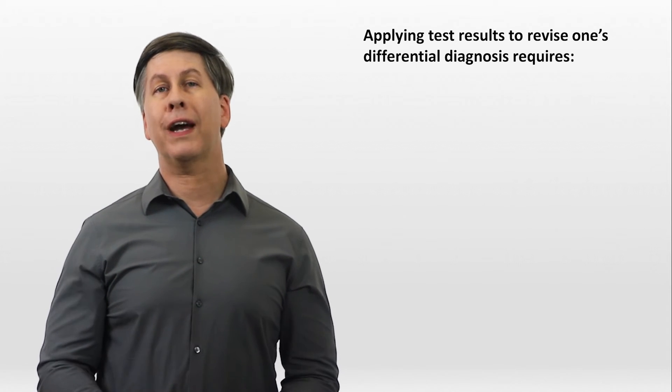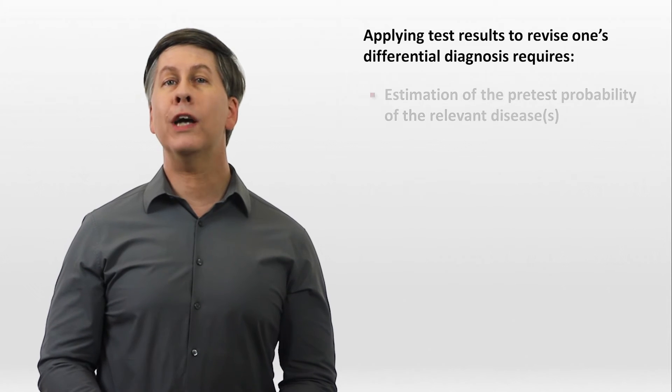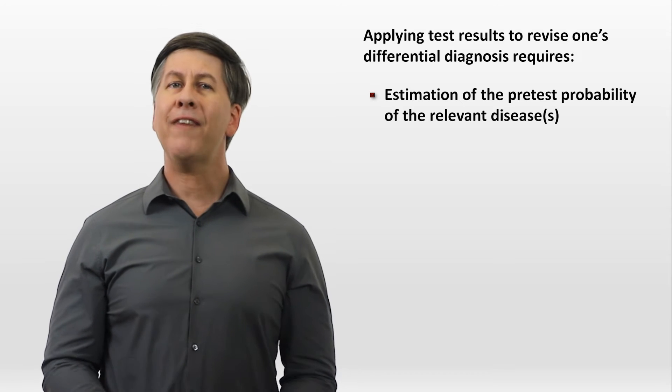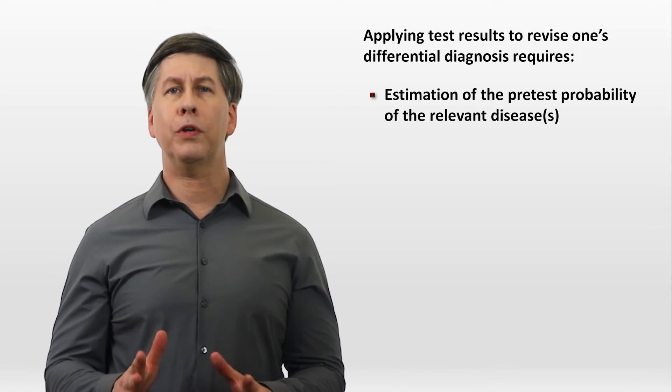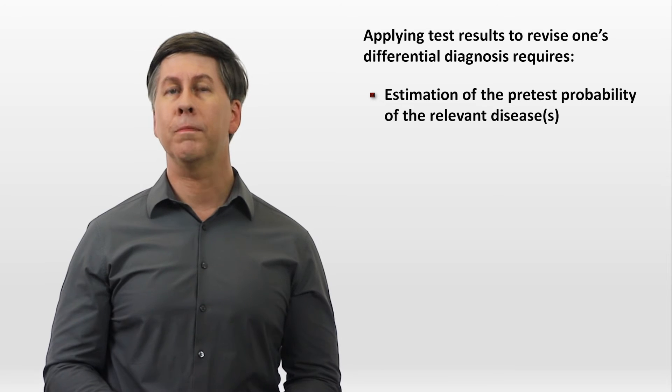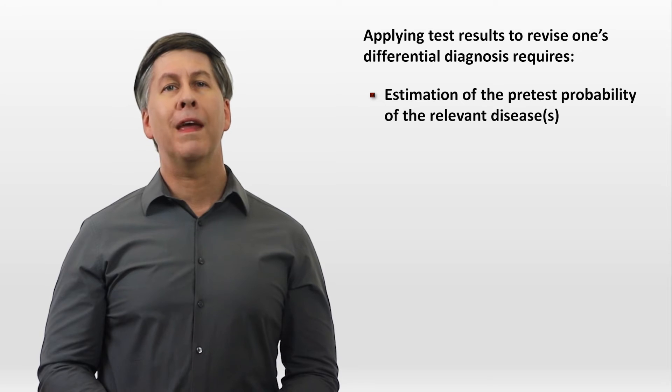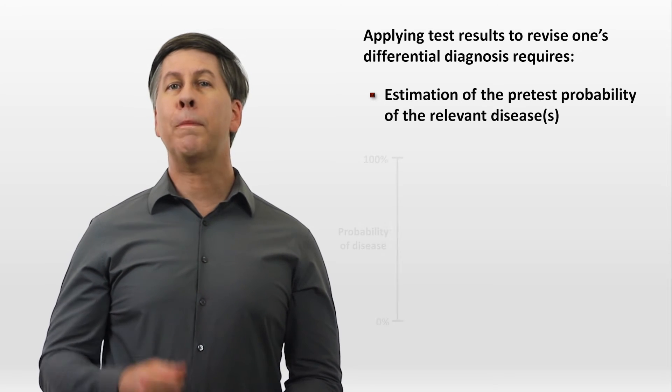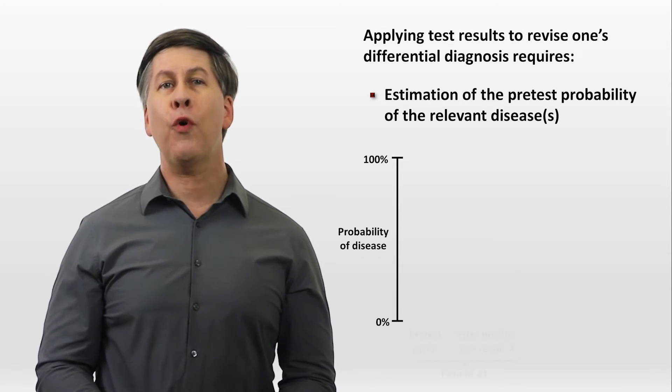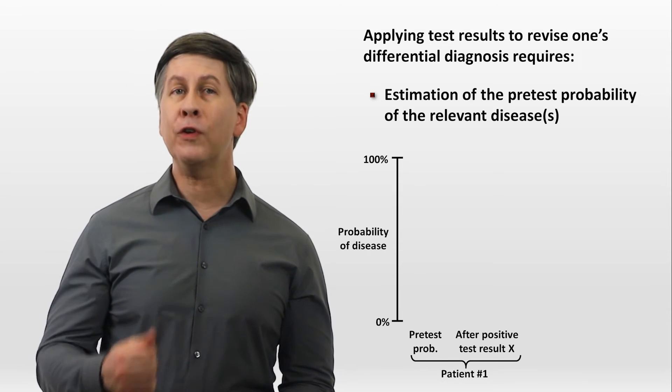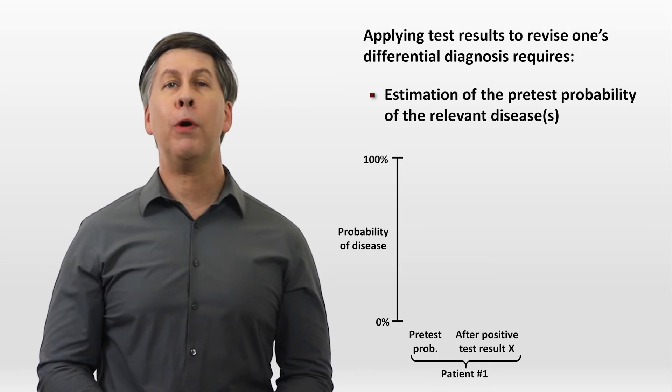So now how do we apply a test result to our hypothesis? That is, how do we revise our differential diagnosis? This requires an estimation of the pretest probability of the relevant disease or diseases. I haven't really talked yet about the concept of pretest probability in this series, except in passing. I'll talk much more about it in parts 2 and 3, but for now, in brief, as the term suggests, this is the probability a patient has a disease before a given test result is known. The probability of the disease after the test result is known is called the post-test probability.